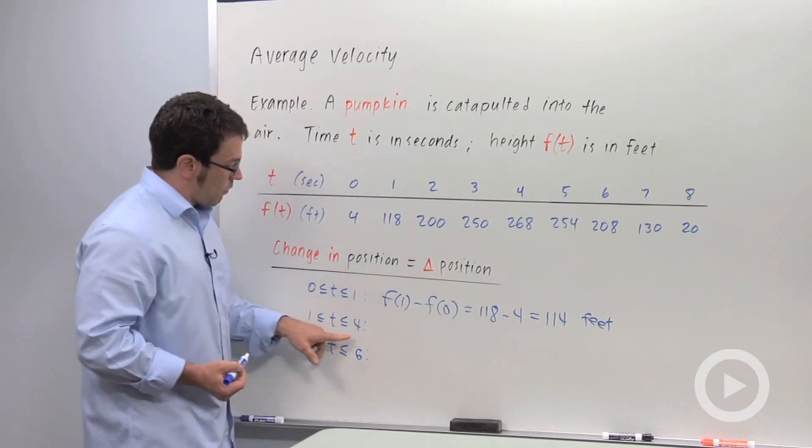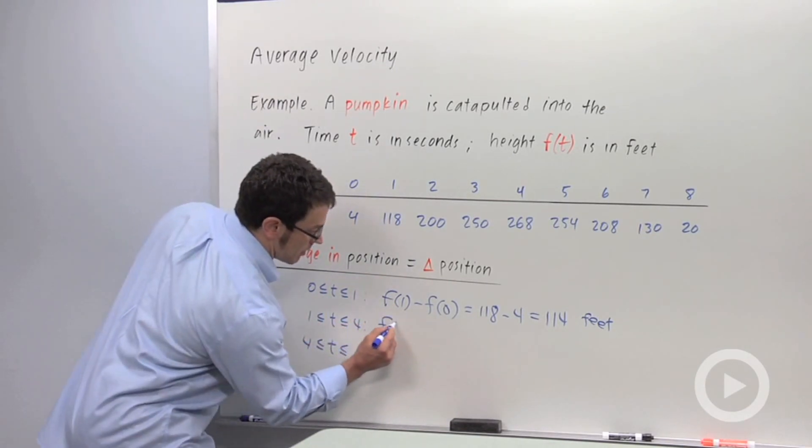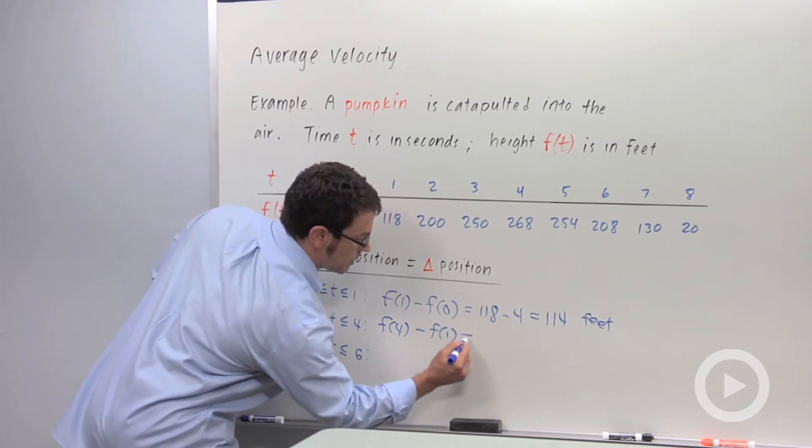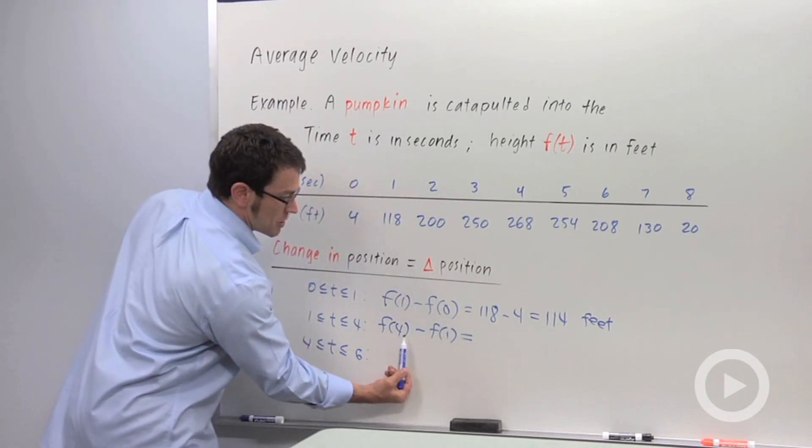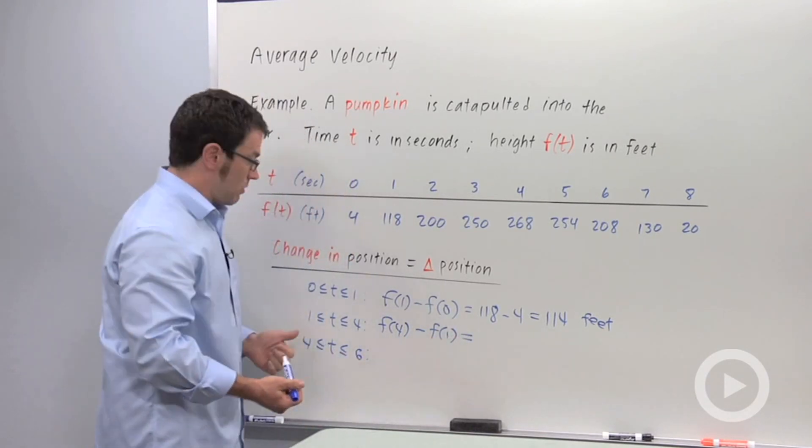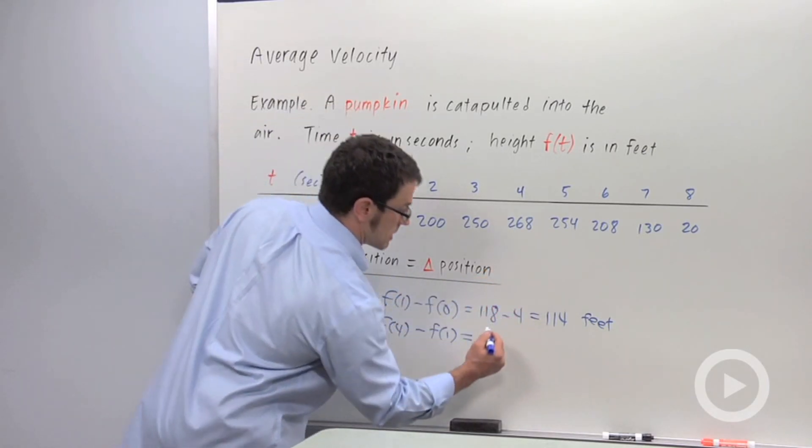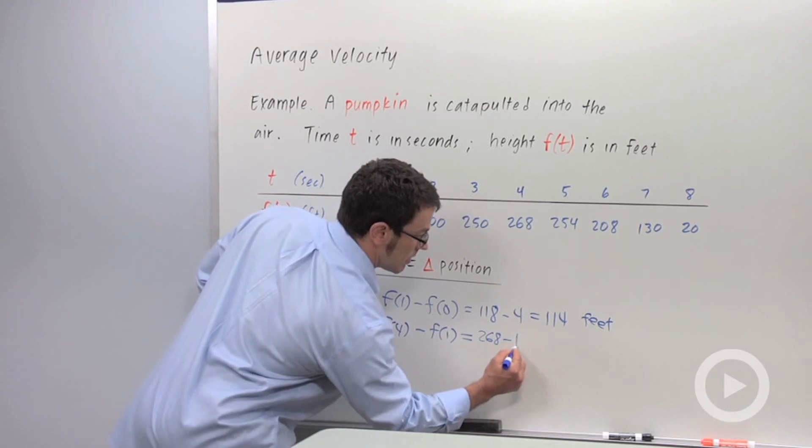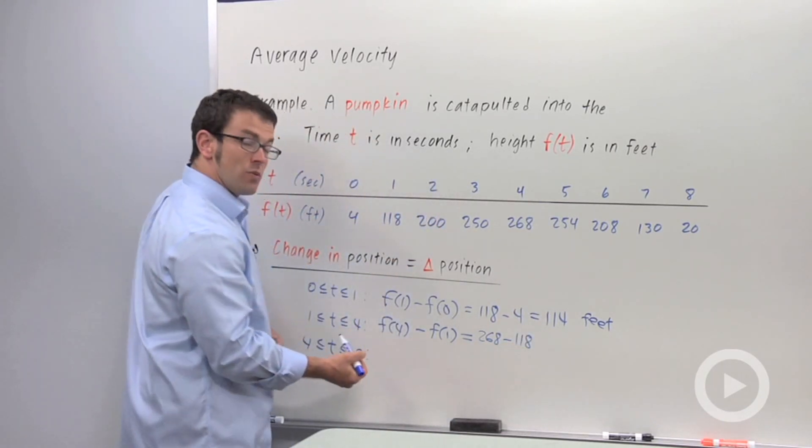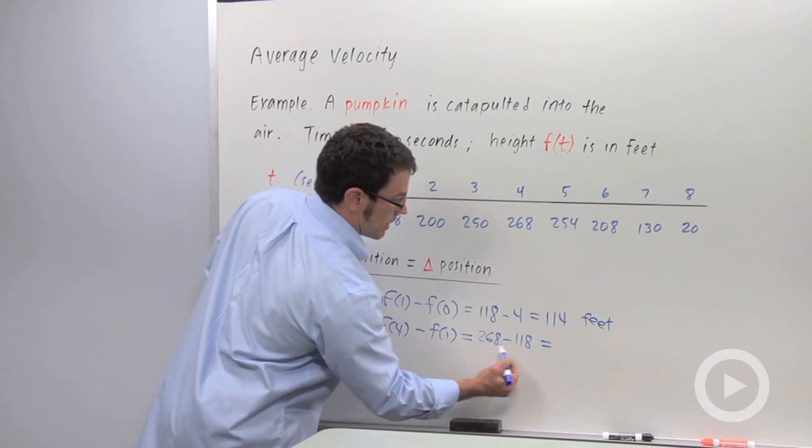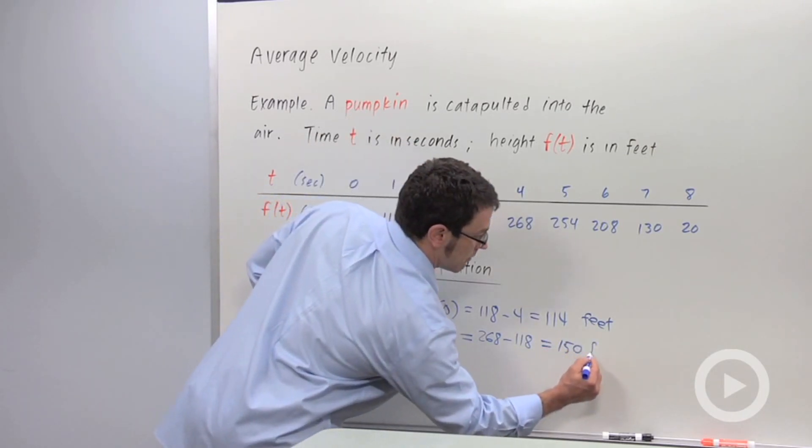Now let's look at the interval from 1 to 4. The change of position is f of 4 minus f of 1. Always remember it's final position minus initial position when you're calculating the change in position. f of 4 is 268. And again, f of 1 is 118. So you just subtract and you get 150 feet.